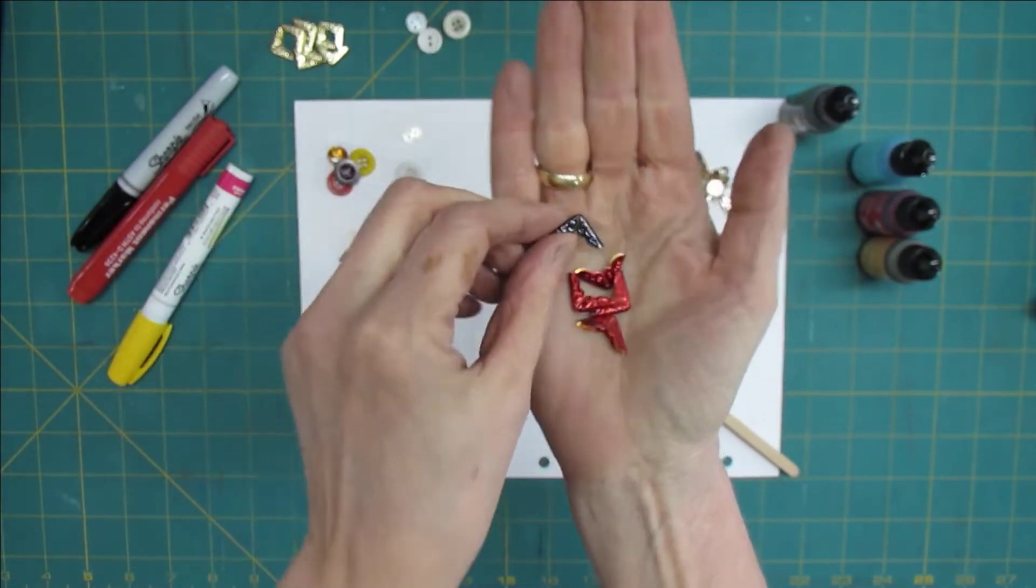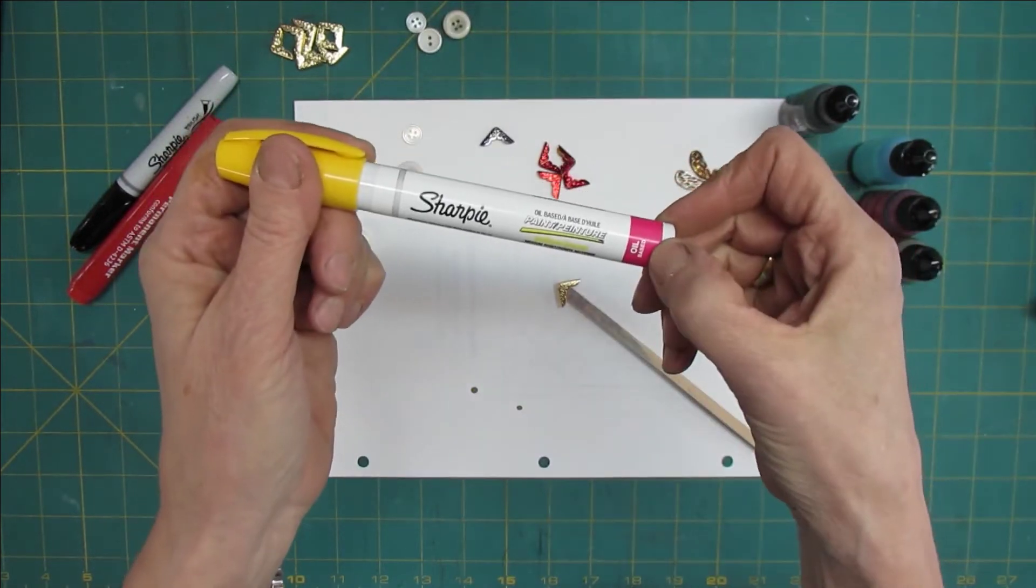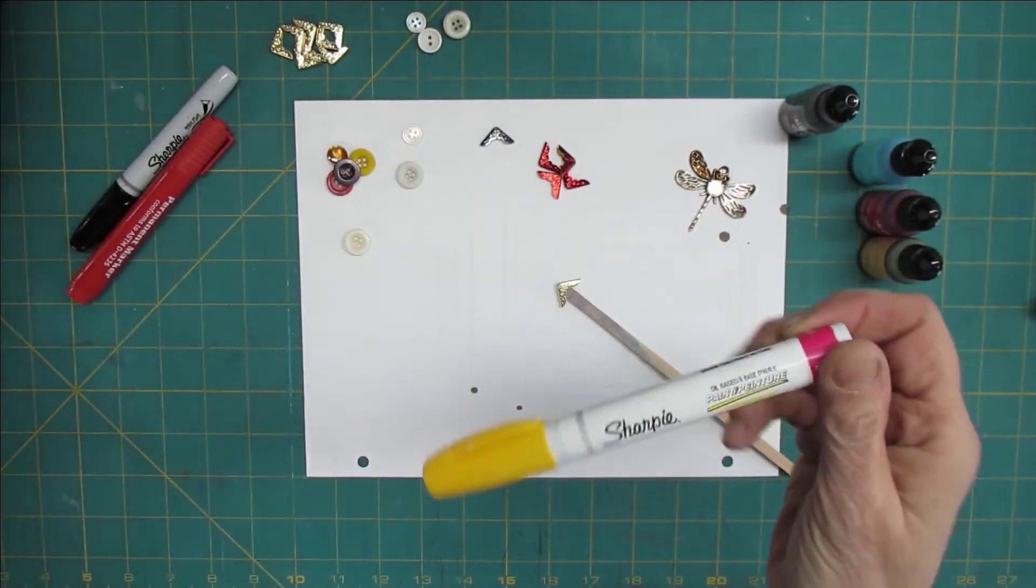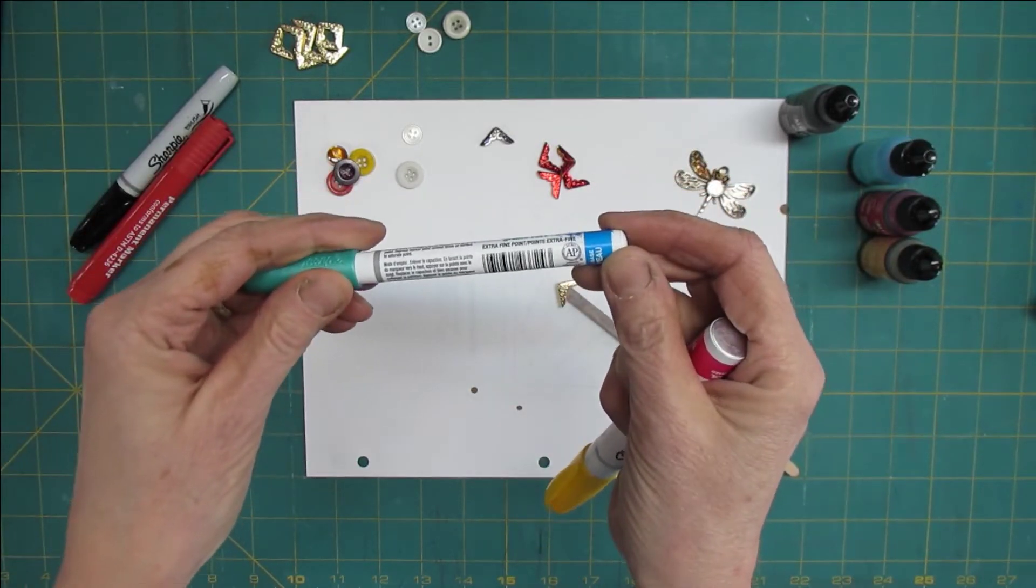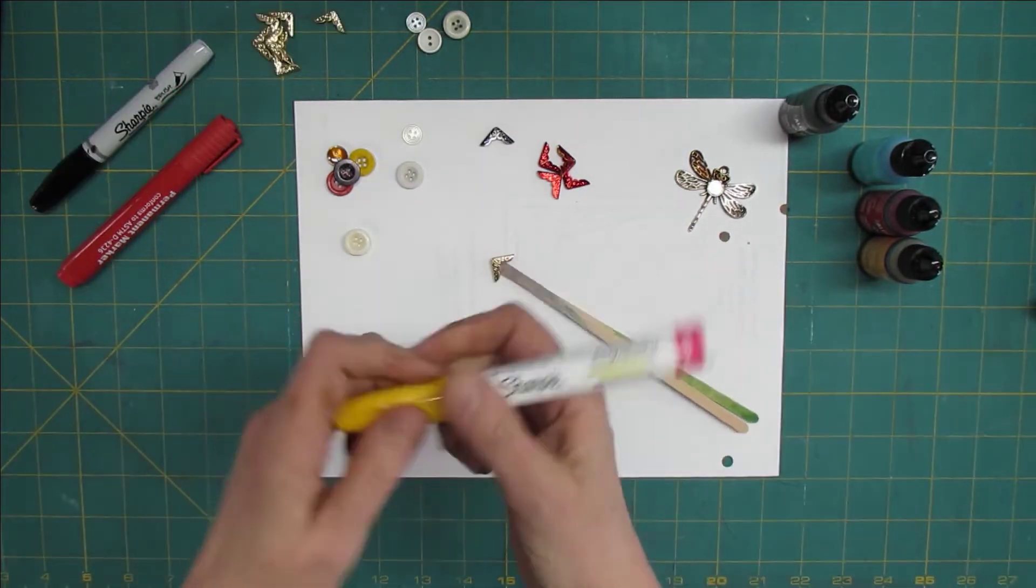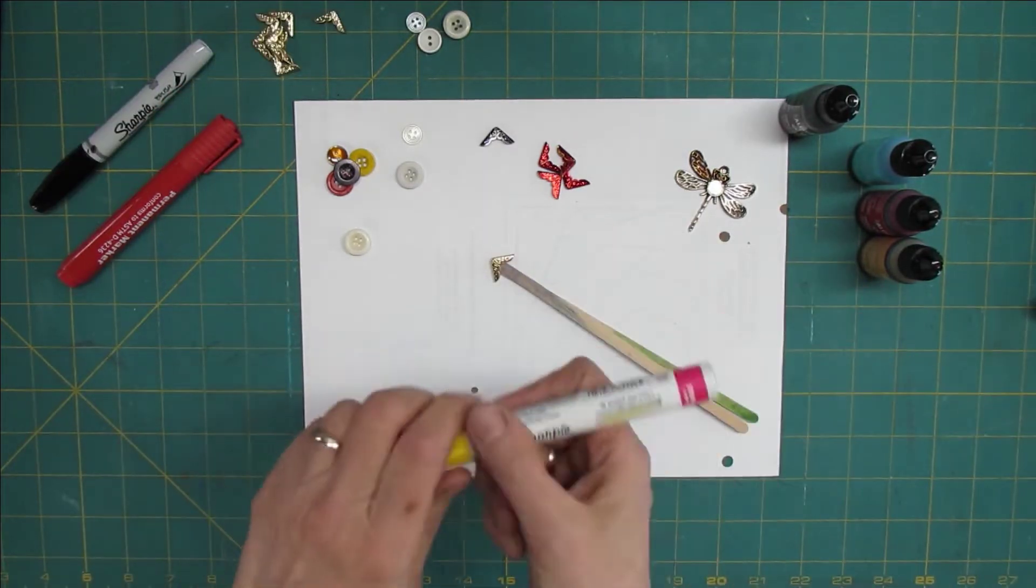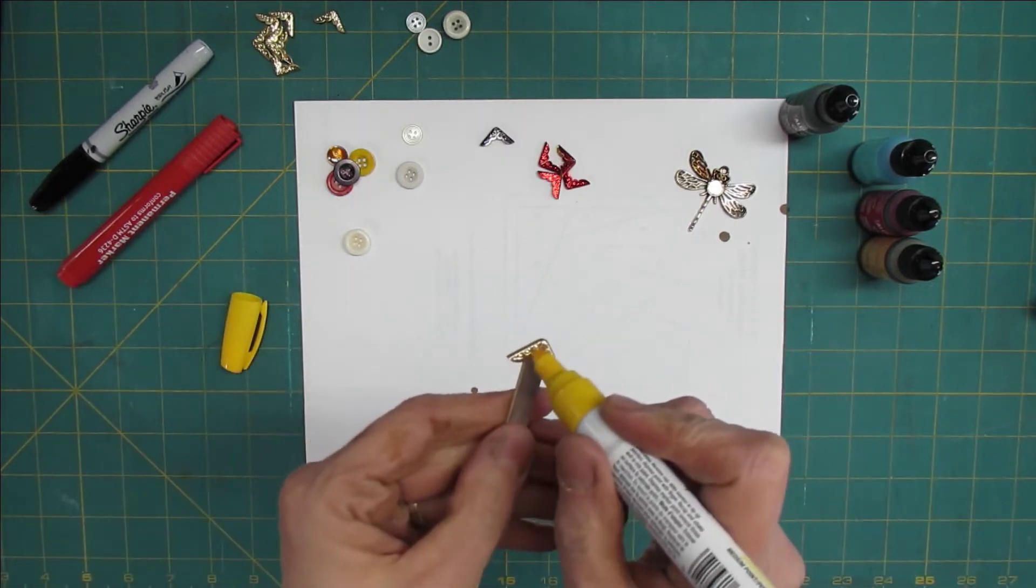So a Sharpie marker works, or this is a paint pen. This is from Sharpie, this is oil-based, and they're also available in water-based. Water-based is not as opaque, so you have to apply a few more coats. So let's try this one first. You have to shake it up a little bit to activate the paint so that the paint is all mixed up.